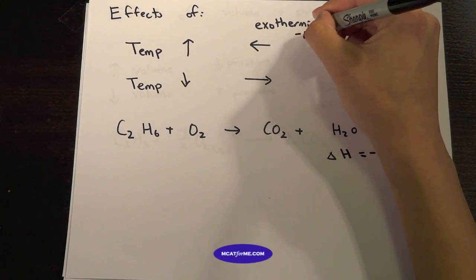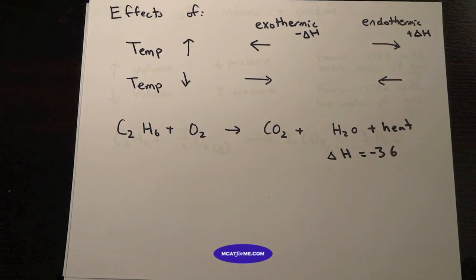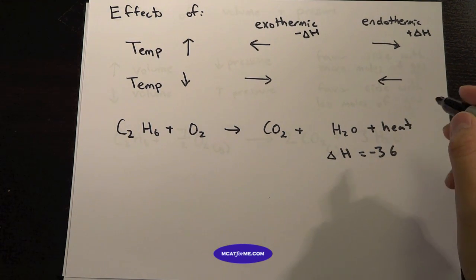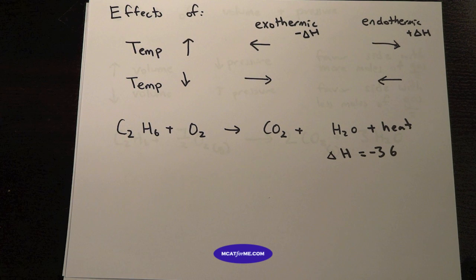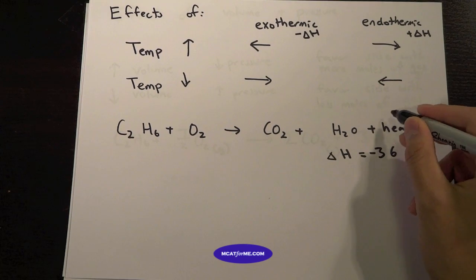So negative delta H, positive delta H for endothermic reactions. So negative delta H would be heat on the right side. So this is pretty much the same. We can think of this like a product.